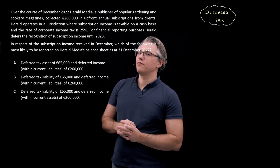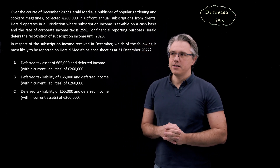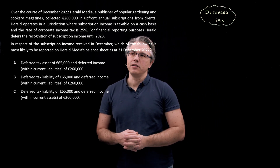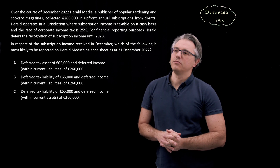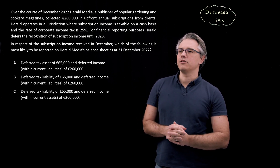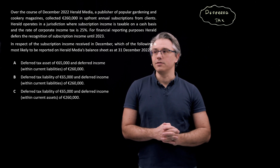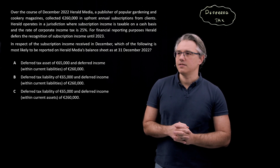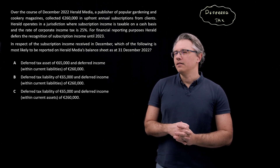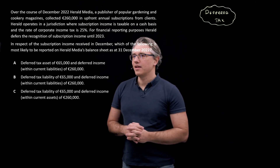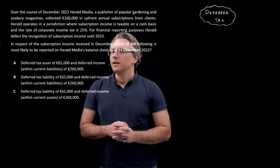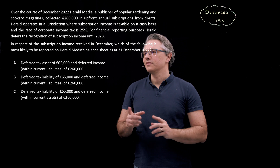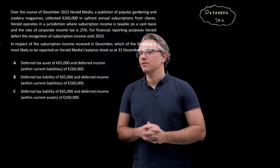As stated in the next sentence, for financial reporting purposes, Herald defers the recognition of subscription income until 2023. In respect of the subscription income received in December, which of the following is most likely to be reported on Herald Media's balance sheet as at the 31st of December 2022? The choices include deferred tax asset, deferred tax liability, and various numbers — with different configurations of current assets or current liabilities.